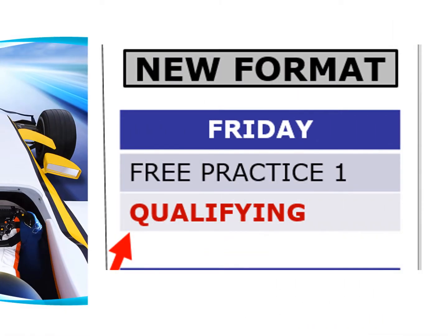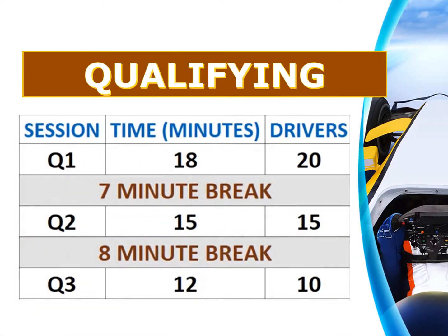The Friday qualifying session is used to determine the starting order for the sprint race. Qualifying is a one-hour event that is split into three parts — Q1, Q2, and Q3 — with short breaks in between each session. Pole position for the sprint race is determined in the third session. I made a detailed video about qualifying, which is linked in the description below.